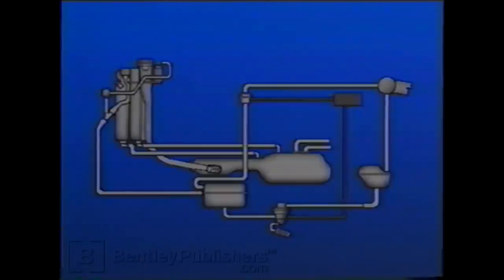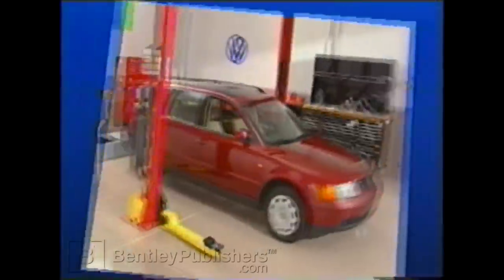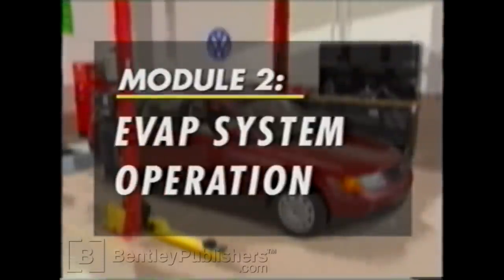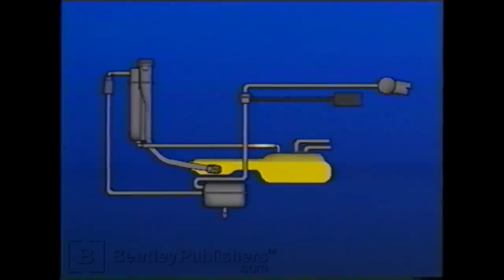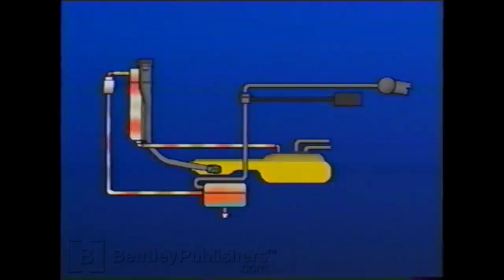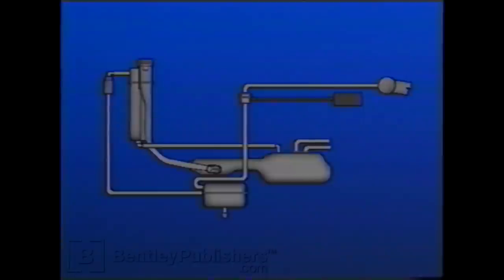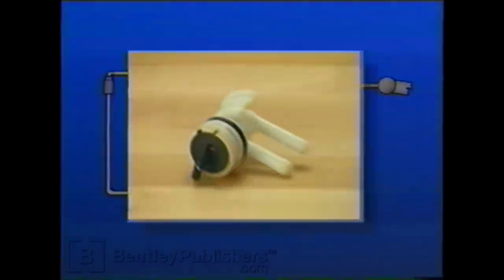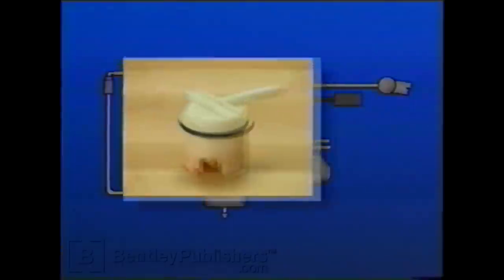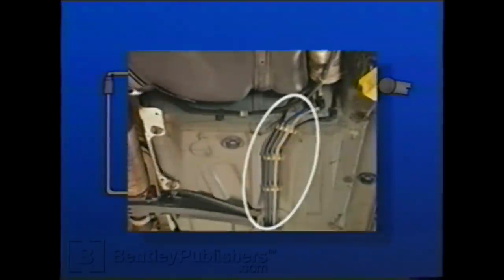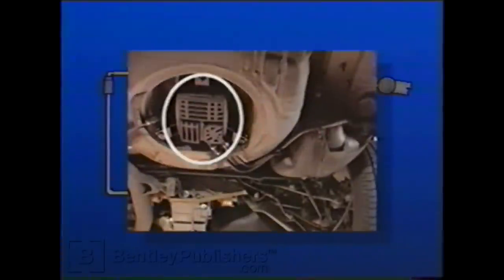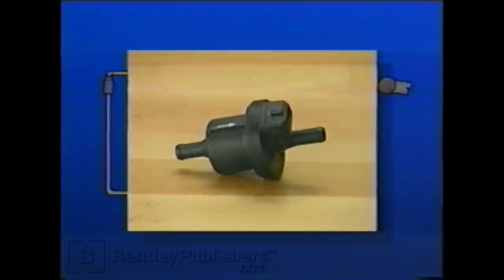Now let's take a more detailed look at exactly how the EVAP system works. The EVAP system has been designed to stop hydrocarbons from escaping from the fuel tank into the atmosphere. The components in the system include: the ECM, the fuel cap, the fuel tank, the breather or expansion bottle, the breather valve, the rollover valve, the vent lines, the EVAP canister, and the EVAP canister purge regulator valve.